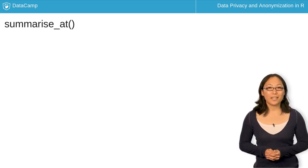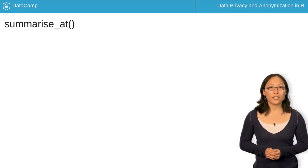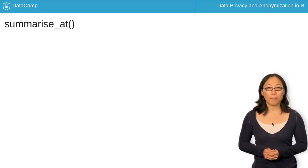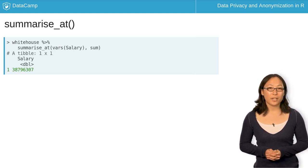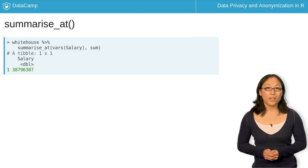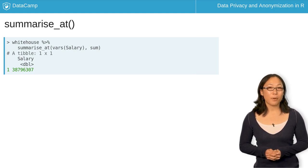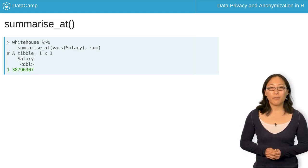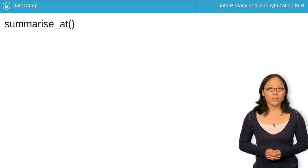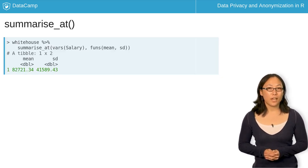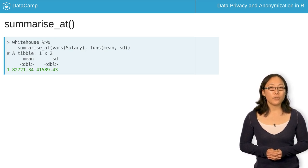Let's move on to summarize_at. This function allows you to calculate summary statistics for your data by applying one or more functions to one or more variables. For example, if you want to know the sum of the salaries in the Whitehouse dataset, you specify the variable salary in summarize_at with vars. The function you want to apply to salary comes after the comma. If you want to apply more than one function, such as mean and standard deviation, to the salary variable, you can use funs to specify the functions you want to apply.